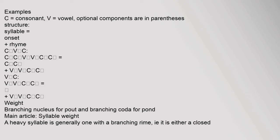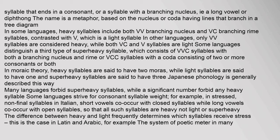A heavy syllable is generally one with a branching rhyme — either a closed syllable that ends in a consonant, or a syllable with a branching nucleus (i.e., a long vowel or diphthong). In some languages, heavy syllables include both VV (branching nucleus) and VC (branching rhyme) syllables, contrasted with V, which is a light syllable. In other languages, only VV syllables are considered heavy, while both VC and V syllables are light.